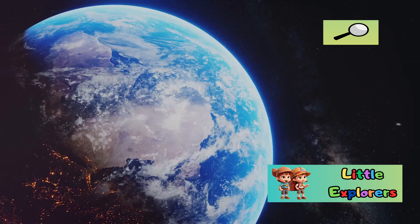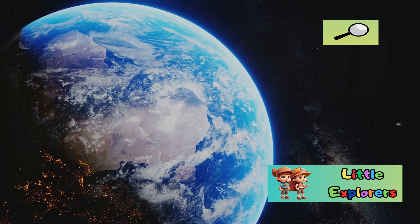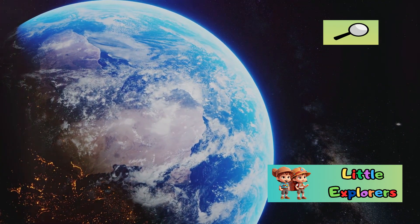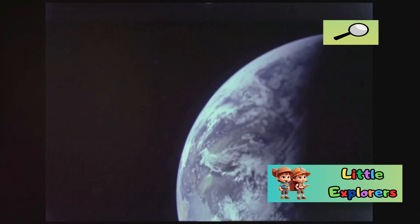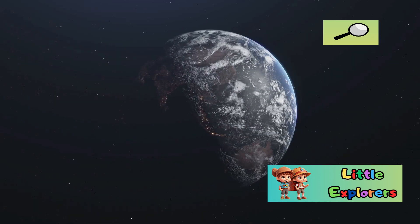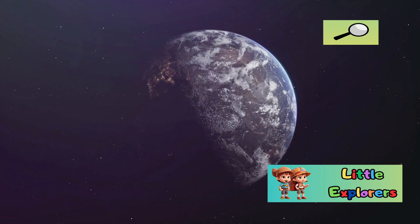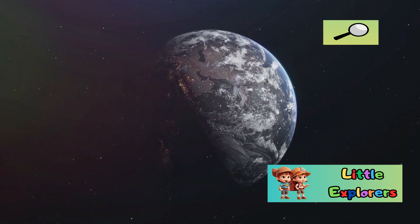Imagine looking down at Earth from space. You'd see a swirling blue marble, a vibrant oasis in the vast darkness. This is our home, a planet teeming with life unlike any other we know of. But what makes Earth so special? What sets it apart from the other planets in our solar system and beyond?